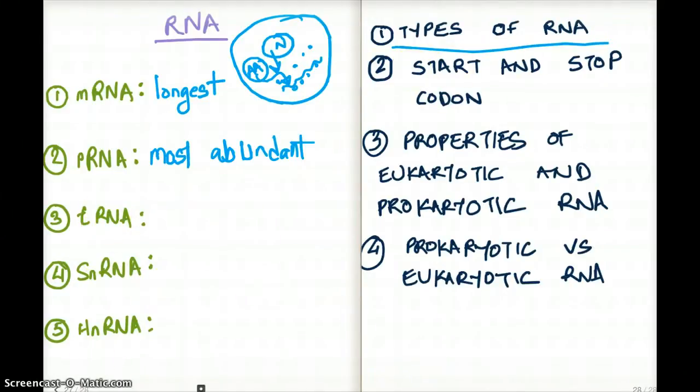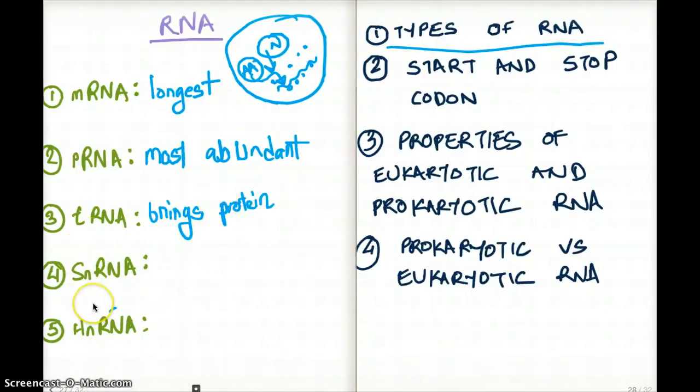The next one is snRNA. Now snRNA, in other words, they're also called small nuclear RNA. Small nuclear RNA is the one that is responsible for converting pre-mRNA to mRNA. So they get rid of introns in our RNA.